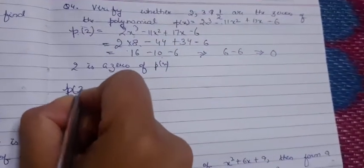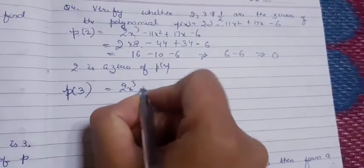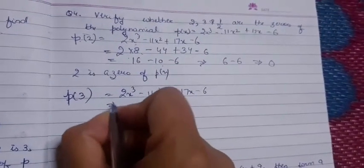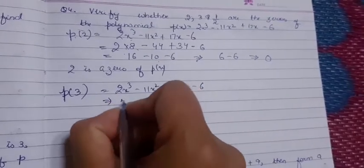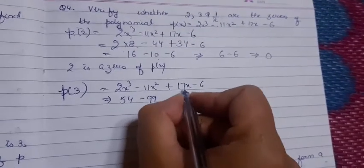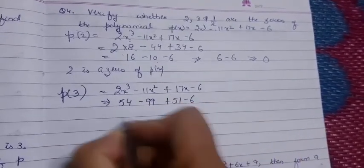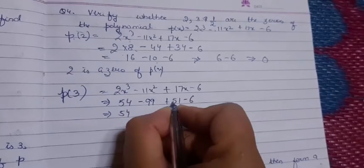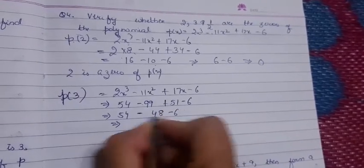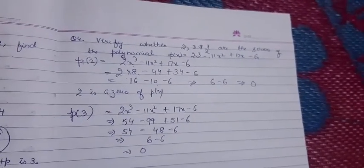Next, we take x = 3. Then we have 2(27) - 11(9) + 17(3) - 6 = 54 - 99 + 51 - 6. Solving: 54 - 99 is -45, plus 51 is 6, minus 6 equals 0. So 3 is also a zero of p(x).